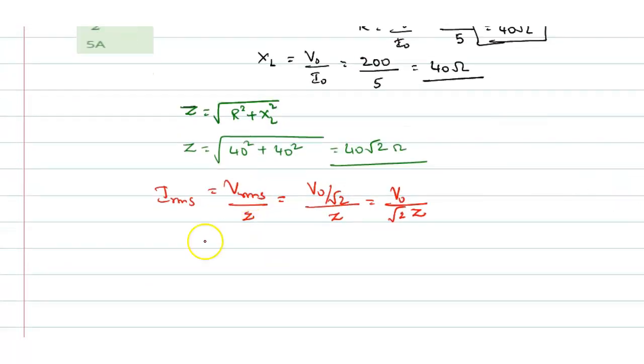So now start applying the values. So I RMS will be equal to V0, V0 value how much they have given? They have given 200 divided by root 2 into Z. Z is how much? Z is 40 root 2. So root 2 into root 2 is 2. So this whole ratio comes out to be 5 by 2 ampere. So the I RMS, RMS value of current will be 5 by 2 ampere.